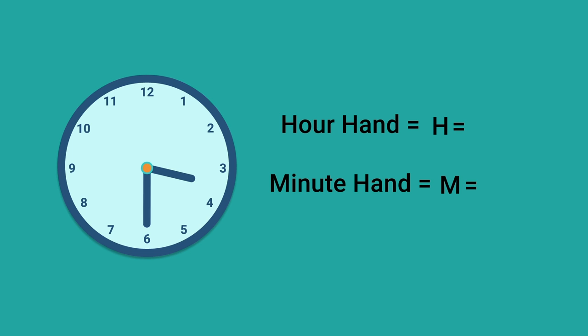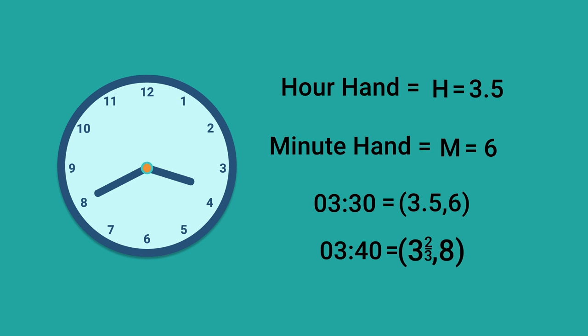If it's 3:30, then h would be 3.5, since it's pointing at the spot halfway between 3 and 4. That's the important part of motion being continuous here. And then m in this case would be 6. So 3:30 would be 3.5 comma 6, and 3:40 would be 3 and 2 thirds comma 8.